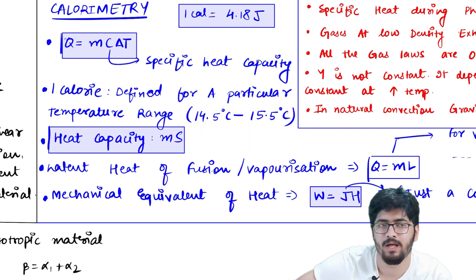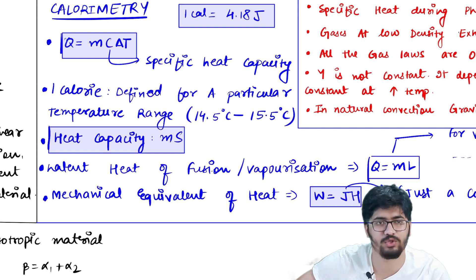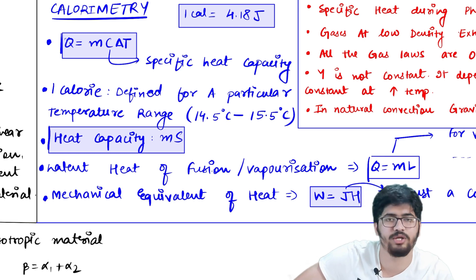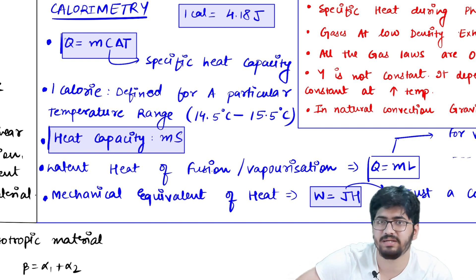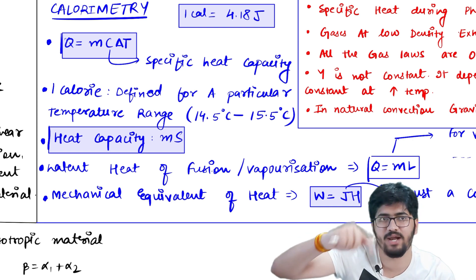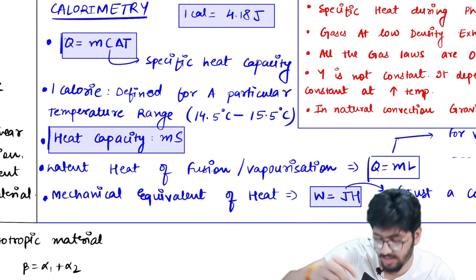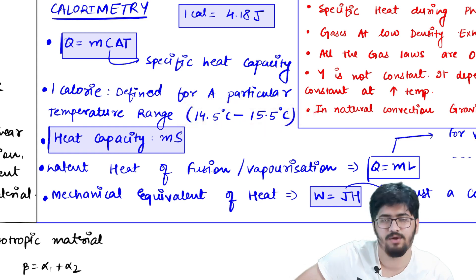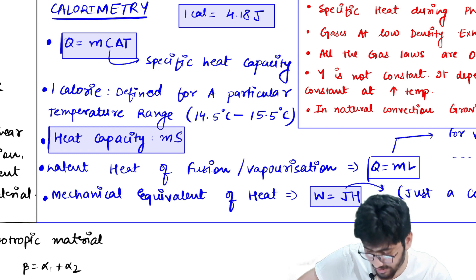If you need to convert, you multiply calories by 4.18 to get joules. But for a theoretical question asking about the calorie definition and its temperature range — the answer is 14.5°C to 15.5°C. Remember this — it is very important.